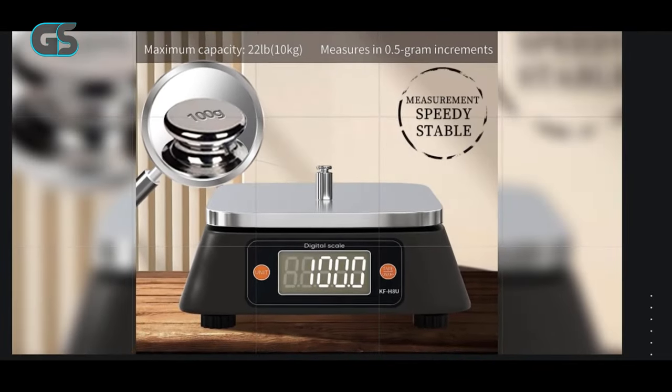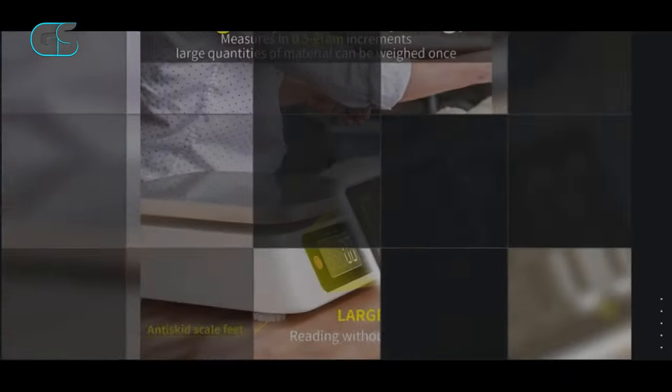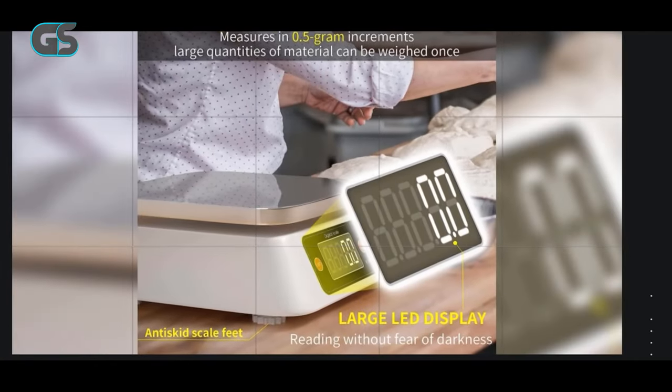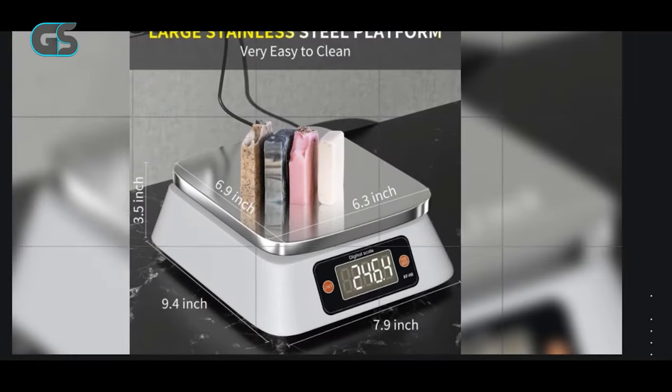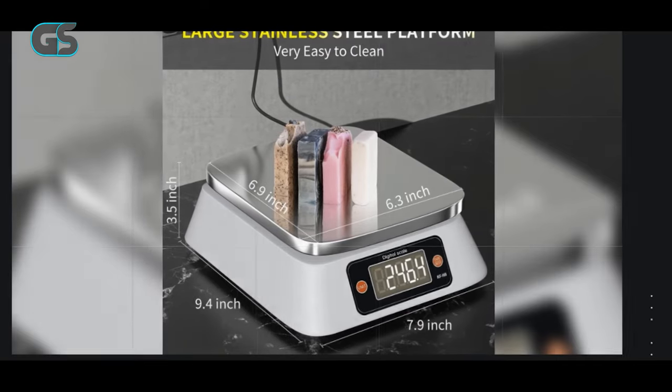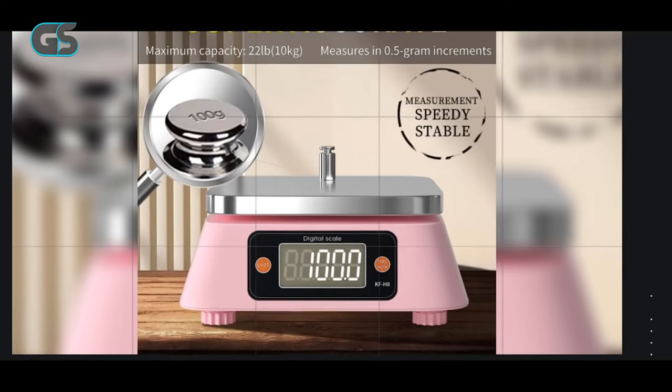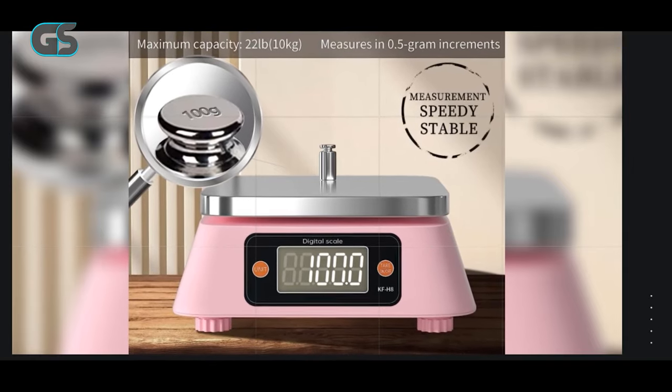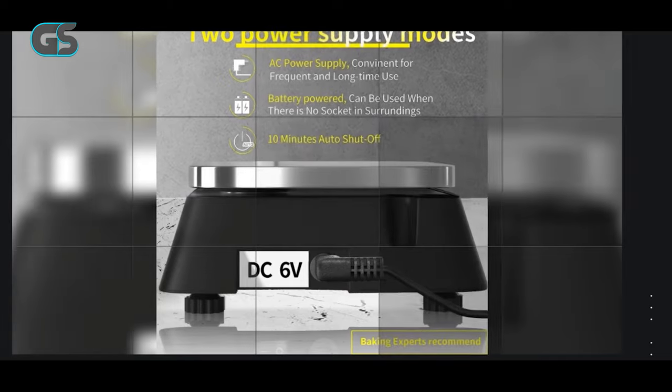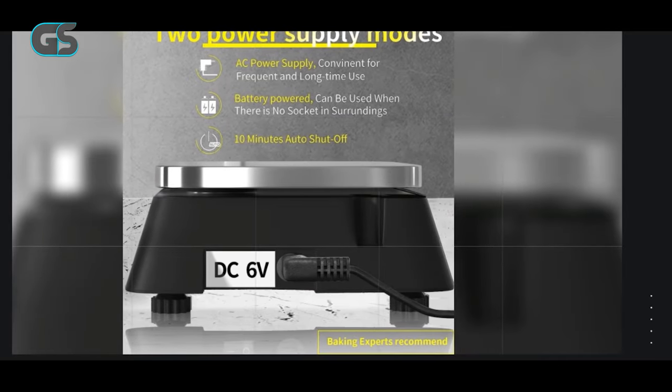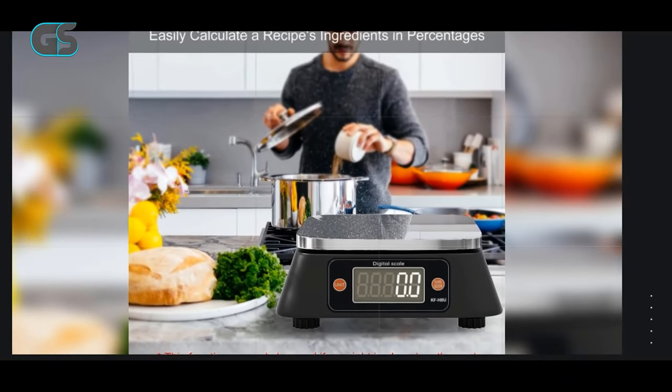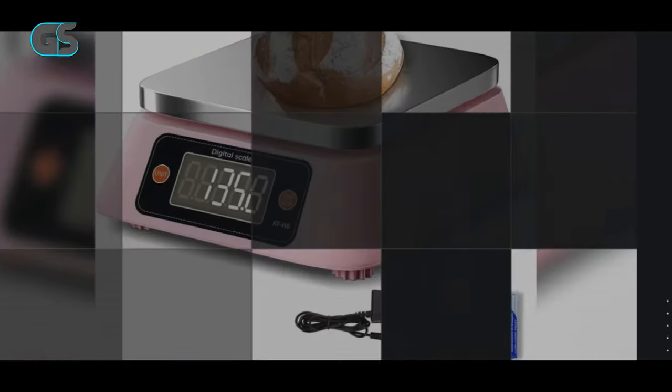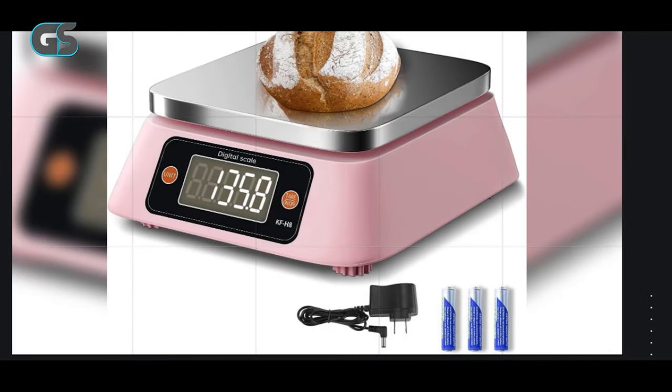When we unboxed the Yonkin KFH8U, we were impressed by its sleek stainless steel platform. This adds a touch of sophistication to any kitchen or workspace and ensures easy cleaning after messy tasks like candle or soap making. The large platform comfortably accommodates larger bowls and containers, making it an ideal choice for various projects. One of the standout features is the scale's impressive weight capacity of up to 22 pounds. This capacity makes it perfect for culinary and crafting endeavors, allowing you to weigh ingredients or materials without limitations. The dual power options, including three AA batteries and an AC power adapter, provide added convenience and flexibility for your workflow.